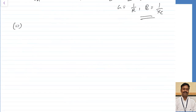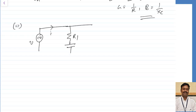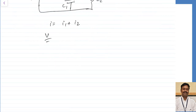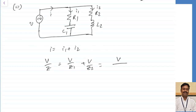For the practical case, no element is purely resistive, inductive, or capacitive — combinations are always present. Taking the combination of R1 and C1 in one branch, and R2 in series with an inductor L2 in a second branch. I can write I equals I1 plus I2, so V by Z equals V by Z1 plus V by Z2. Z1 is R1 minus J XC1 for the RC branch, and Z2 is R2 plus J XL2 for the RL branch.